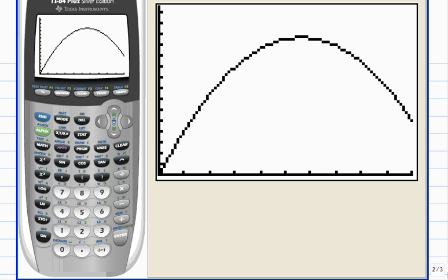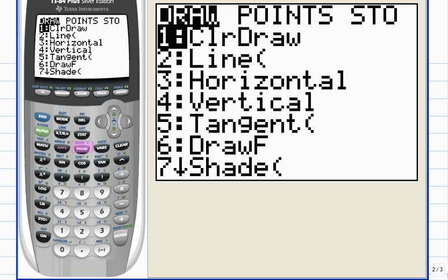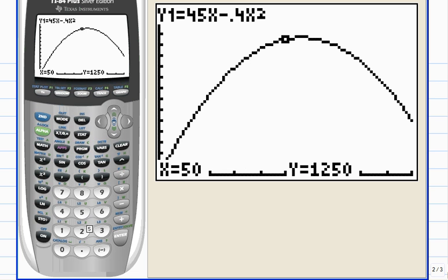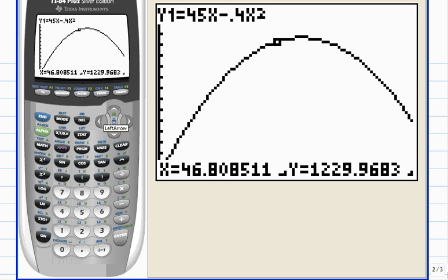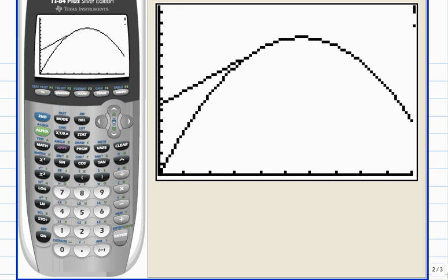Now let's draw our tangent line. Hit second, draw, and choose number five, tangent line. It gives a target where the cursor is located, and you could use the left or right arrow keys, but we'll never get right at x equals 40. So let's just type it in: four, zero, and hit enter.